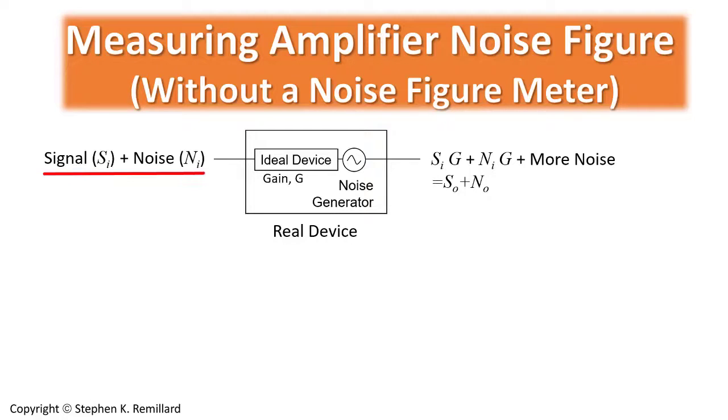The device does work on the signal, gives it a gain of G and adds some extra noise. And out comes the original signal boosted by the gain, the original noise boosted by the gain, and more noise. We'll call n sub o the noise coming out and s sub o the signal coming out.